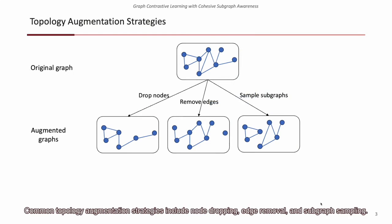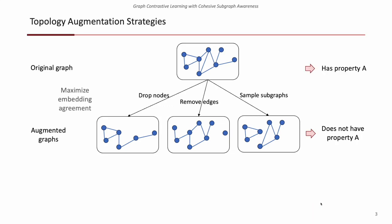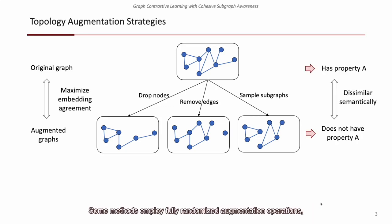Common topology augmentation strategies include node dropping, edge removal, and subgraph sampling. Some methods employ fully randomized augmentation operations, such as removing nodes or edges with equal probability.